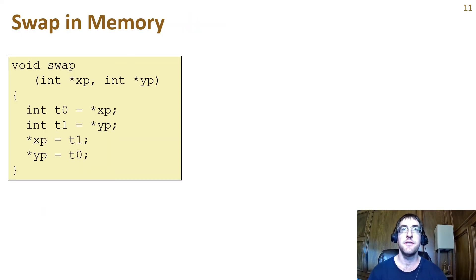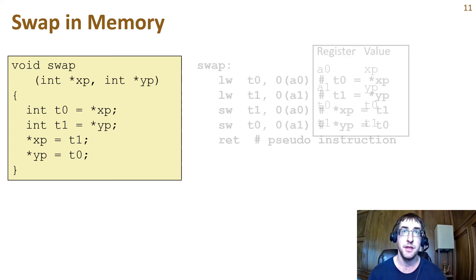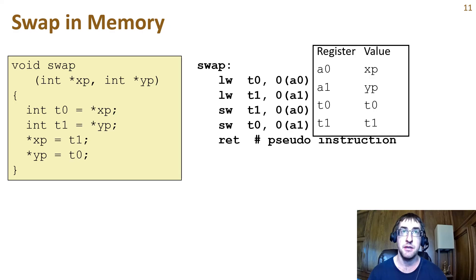Here's a simple C function that takes two pointer arguments and swaps their memory contents. This code dereferences each pointer into a local variable and then stores each variable back to the other pointer. The assembly code does the same thing, but with registers instead of variables. The calling conventions ensure that the values of the xp and yp pointers will be in the A0 and A1 registers. The compiler allocates two caller saved registers, T0 and T1, to temporarily hold the memory values. Because they are caller saved, they don't need to be saved and restored to the stack.